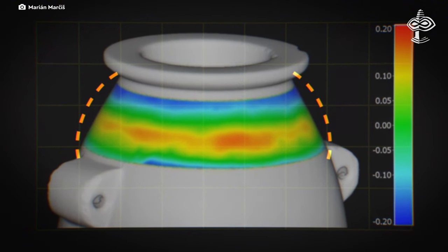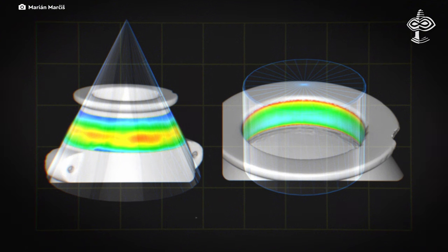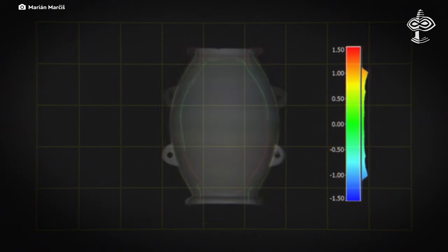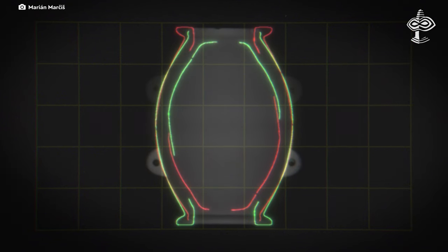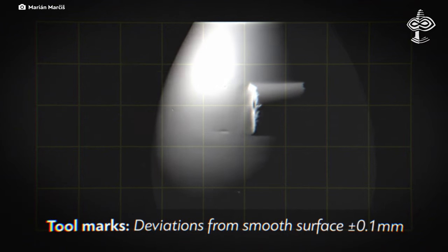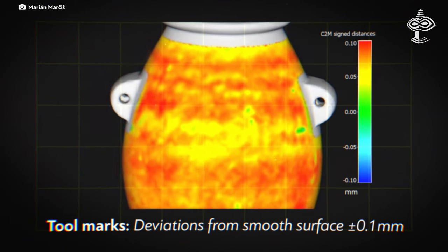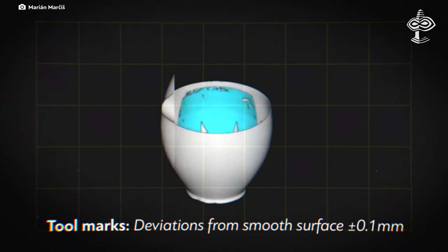Marian Marsis' findings reveal that the vase deviates from basic geometric shapes like cones or ellipsoids and lacks vertical symmetry. Its surfaces are nearly straight but with minor curves. We can also observe potential traces of the tools used in the vase's creation. Some of these marks are more prominently visible in the scans of its interior.